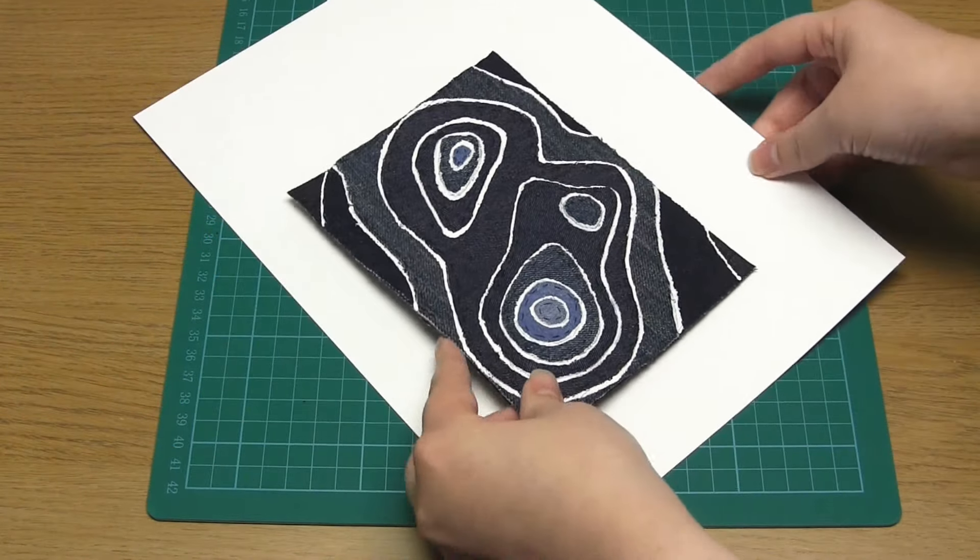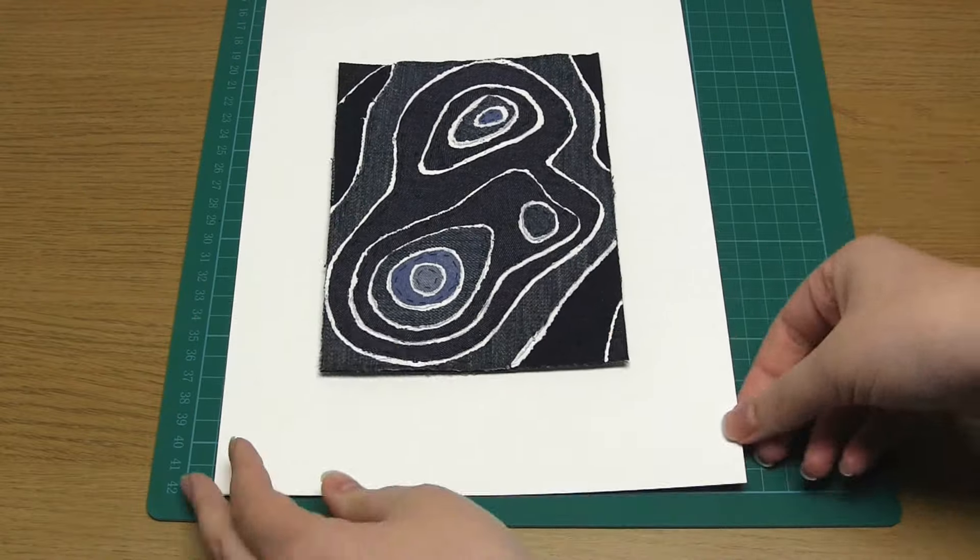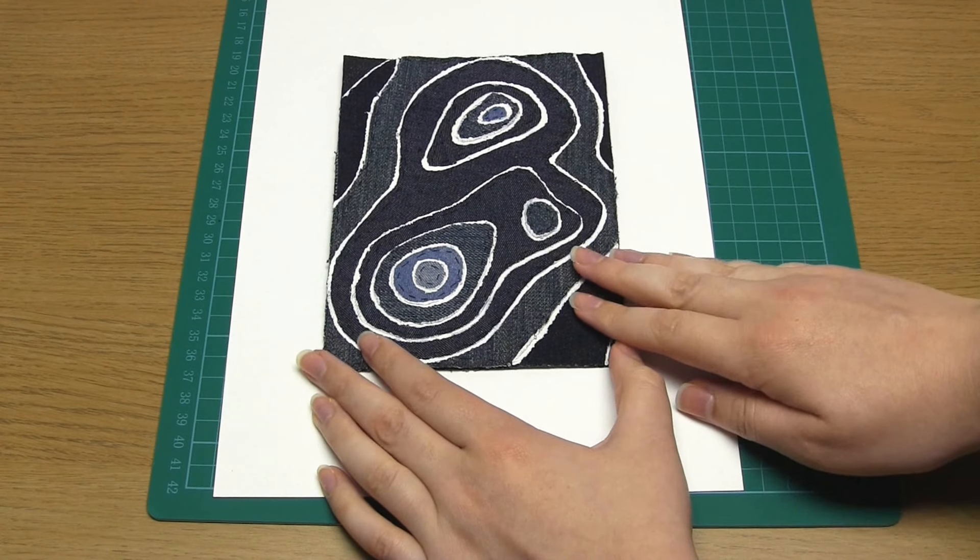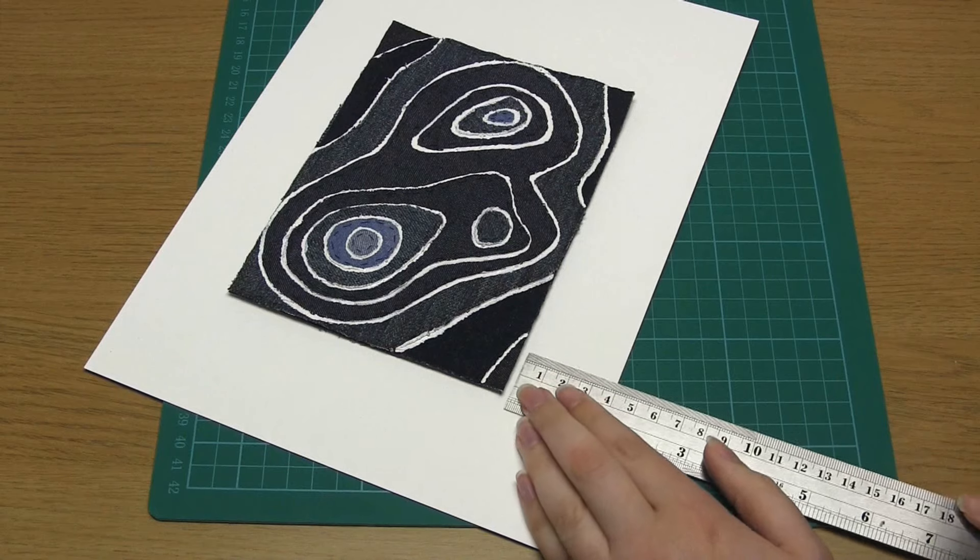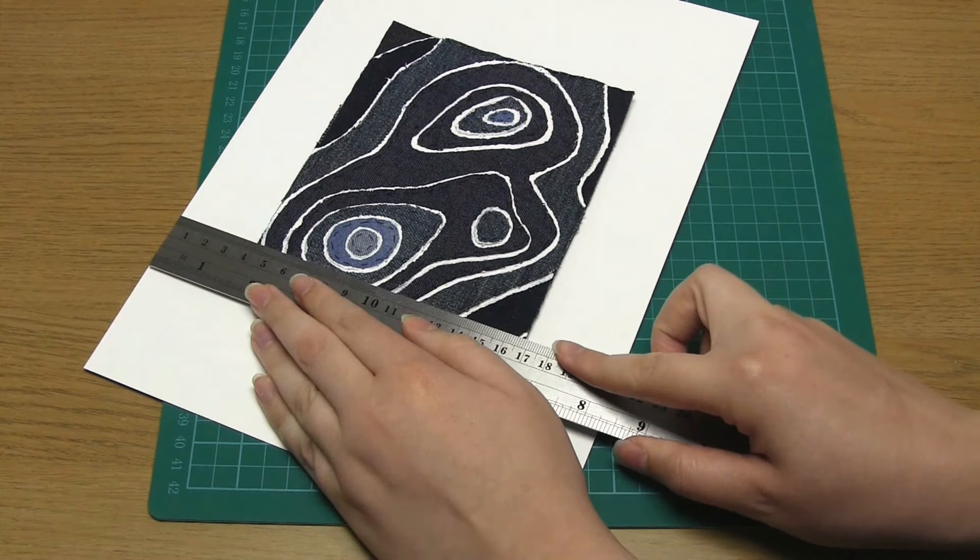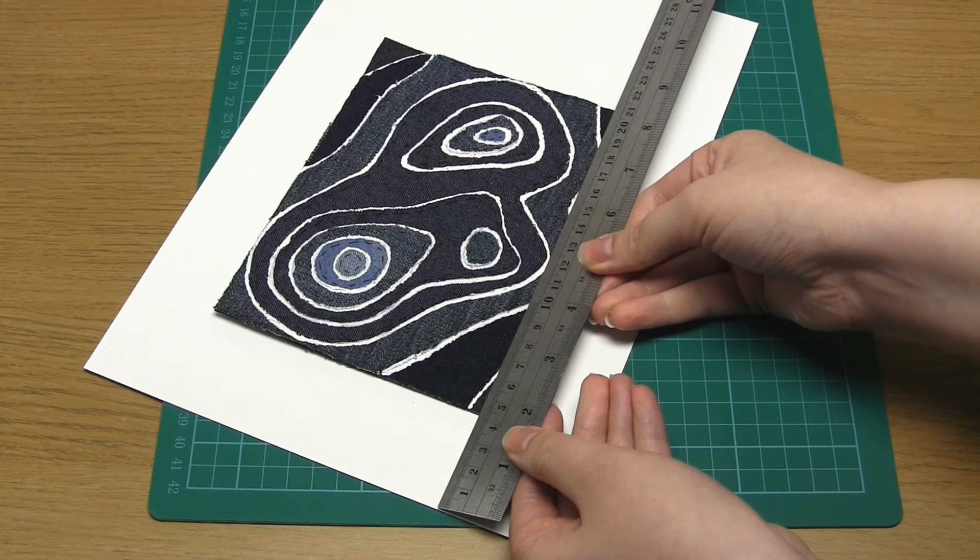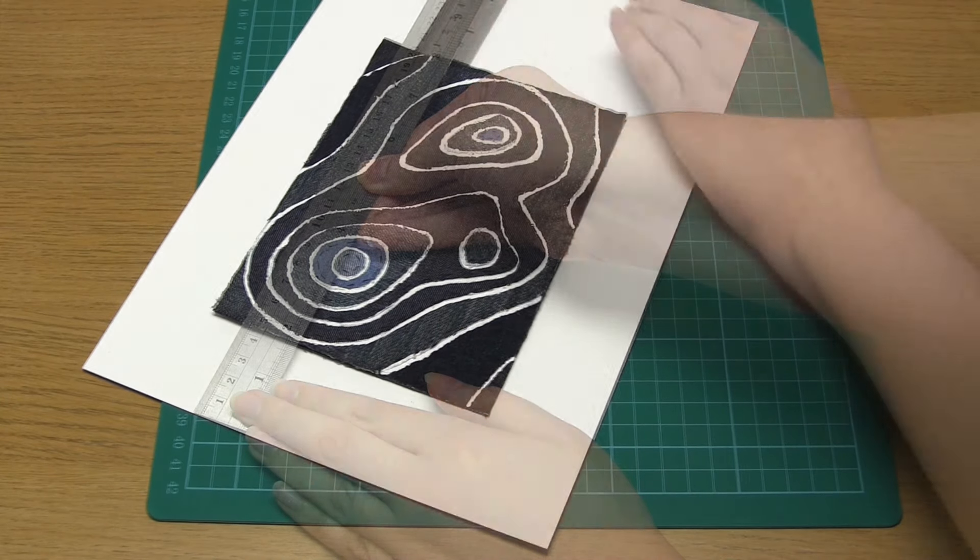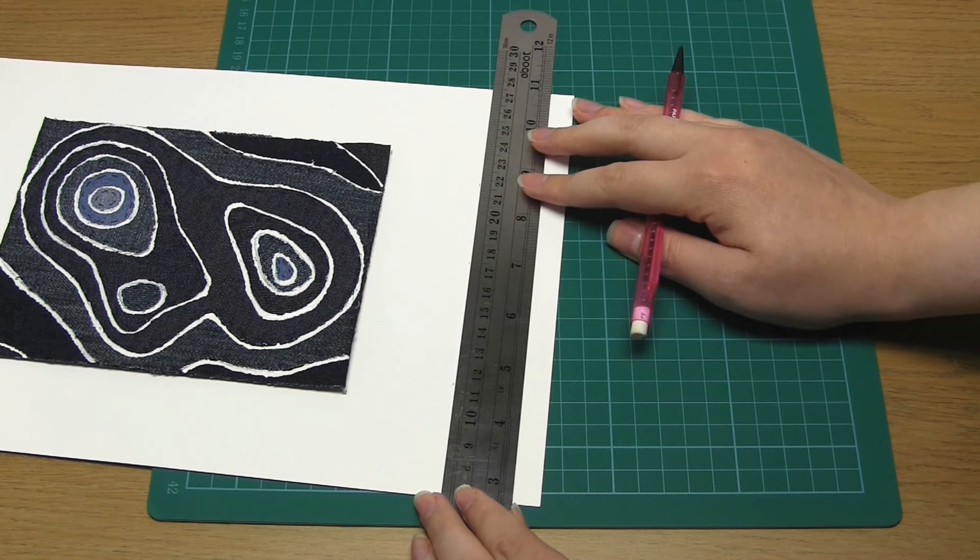Okay, so the first thing you need to do is to make this piece of card four centimeters larger on each side than whatever you're framing. So place your artwork four centimeters away from at least one of the edges, and then measure four centimeters away from the art on each side.